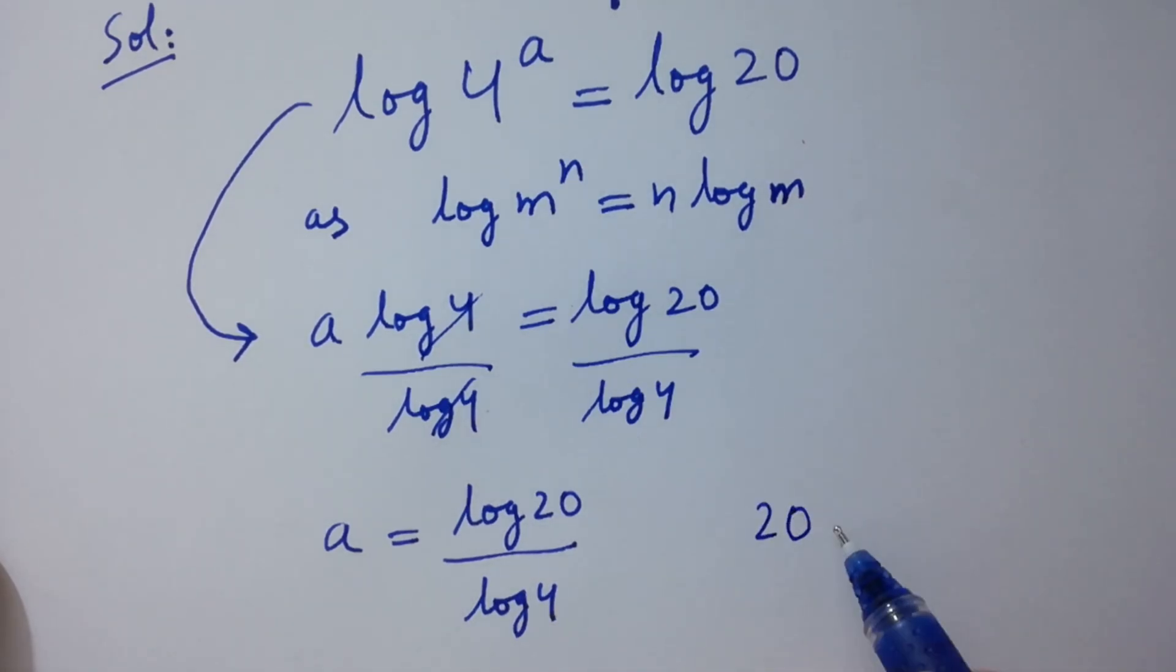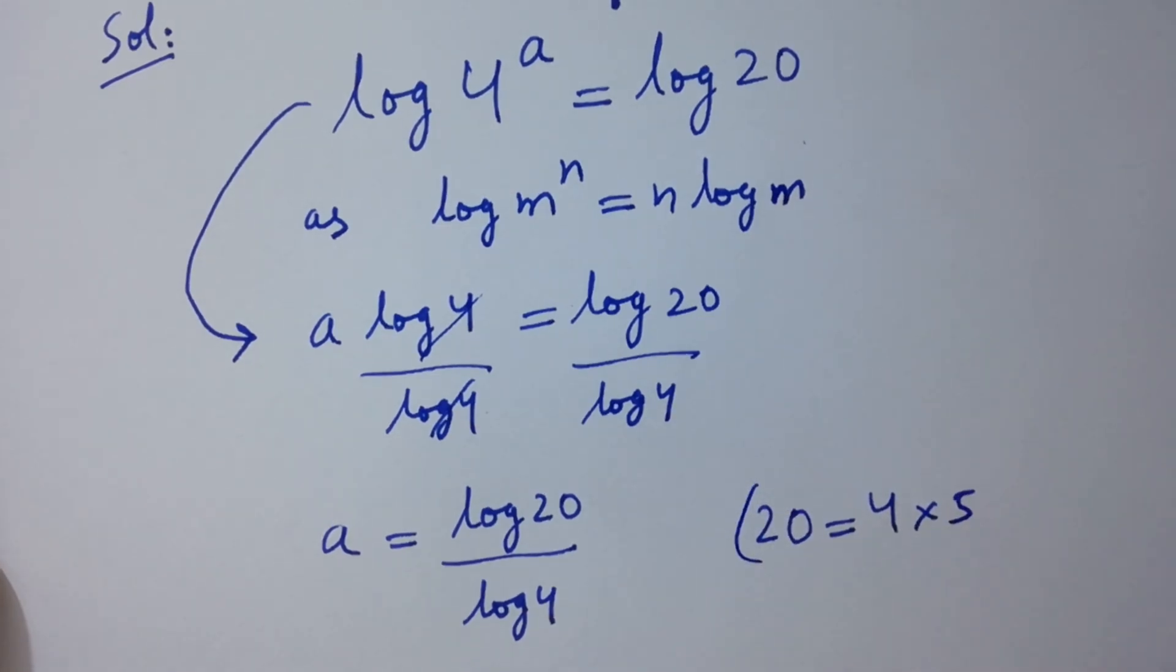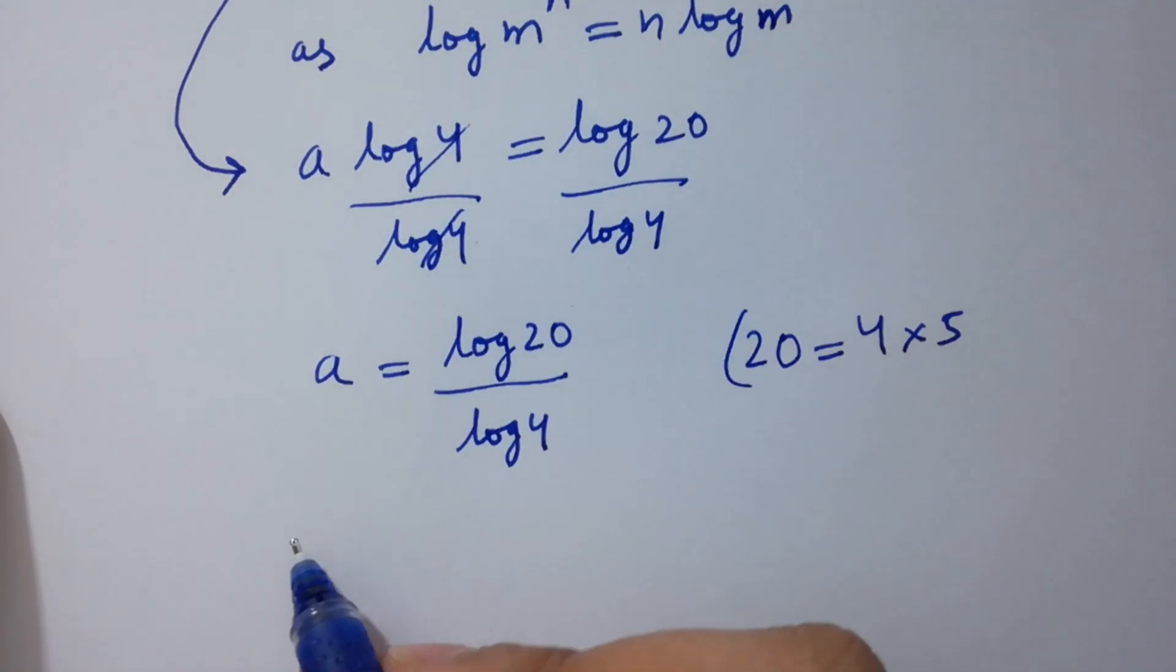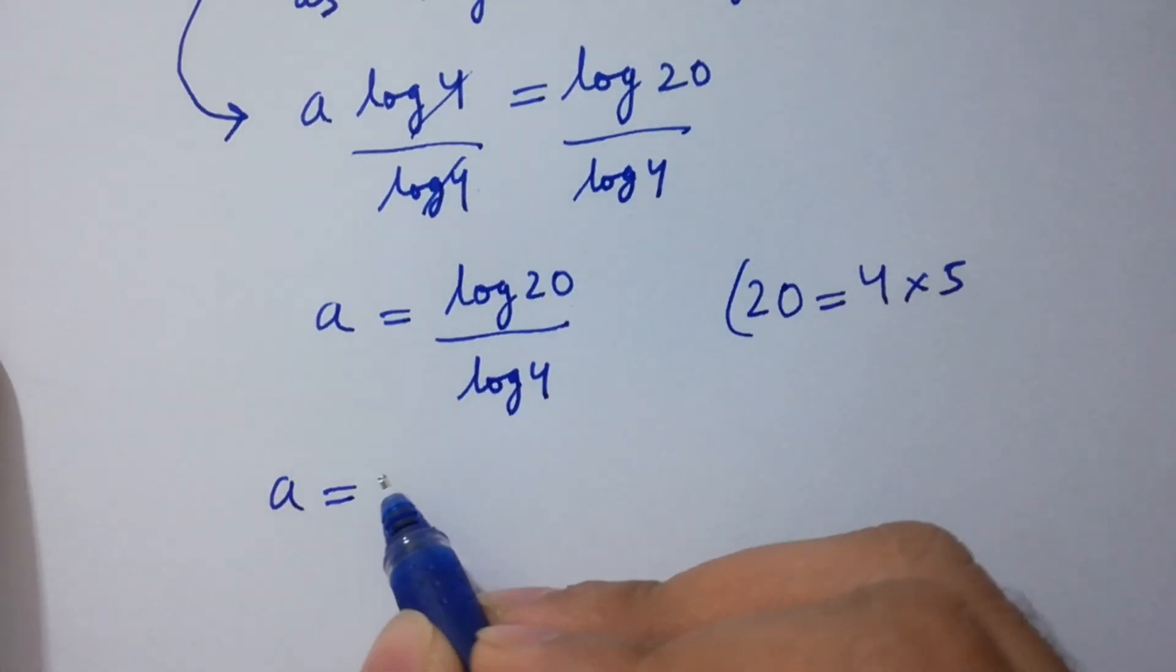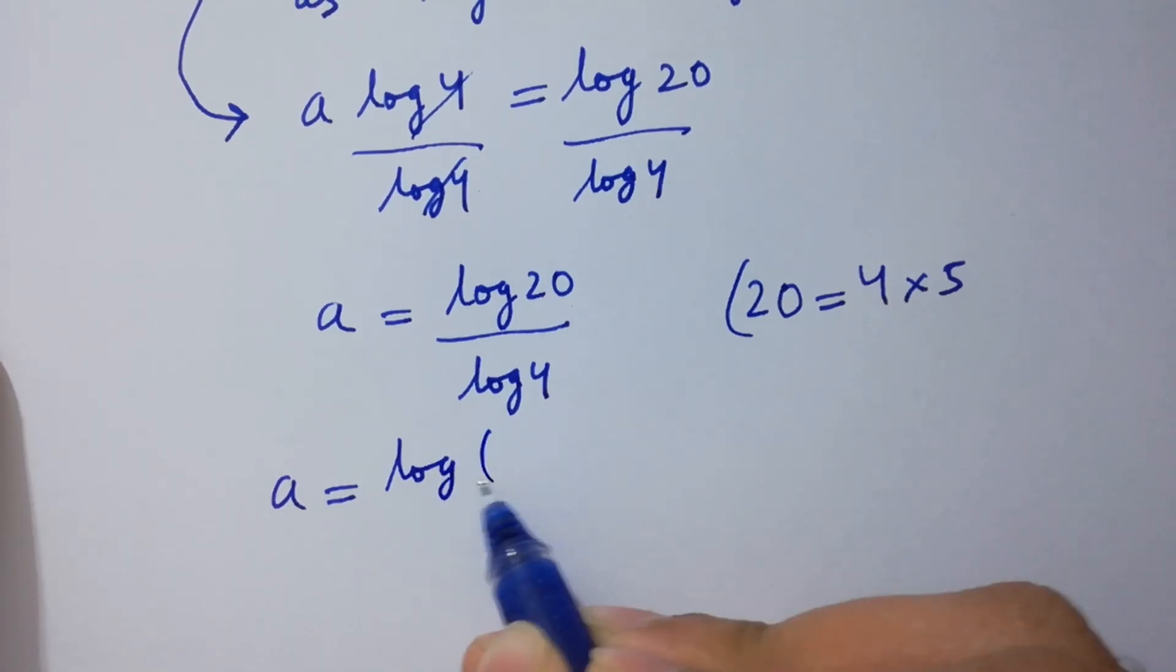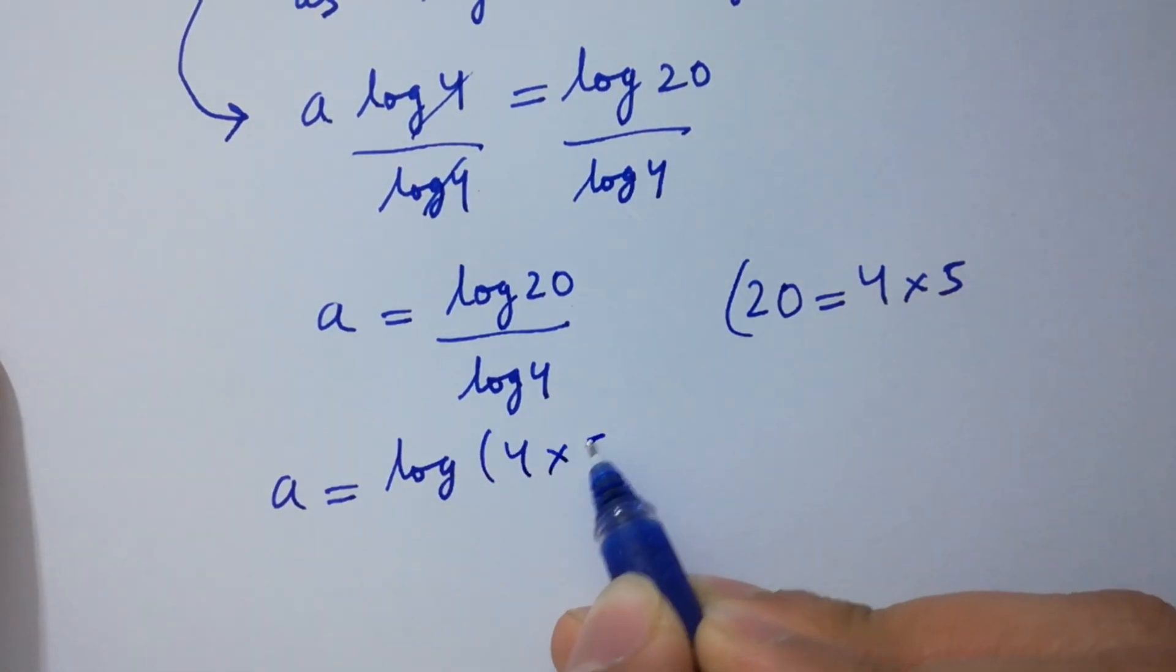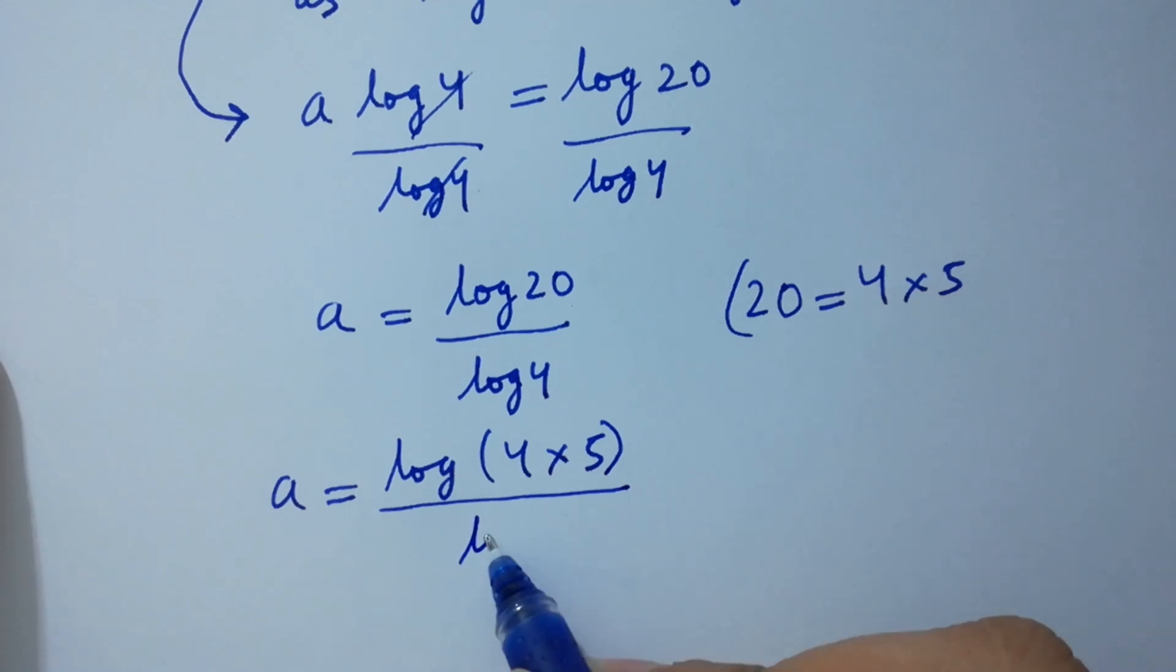20 equals 4 times 5. We have a equals log 4 times 5 over log 4.